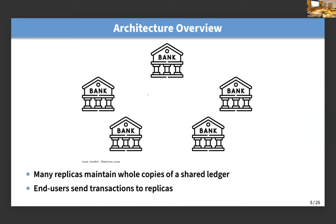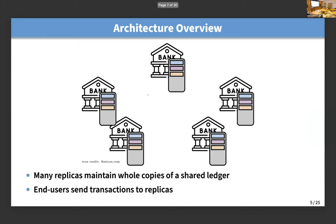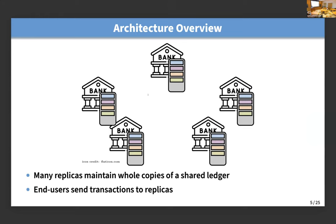Just zooming out, the way all these systems work is there's a bunch of different full nodes or replicas — think of many different banks. Each one maintains a copy of a shared ledger, which has a list of transactions on it. When people send new transactions, this gets added to the ledger. And replicas run some consensus protocol to make sure all the ledgers stay in sync.